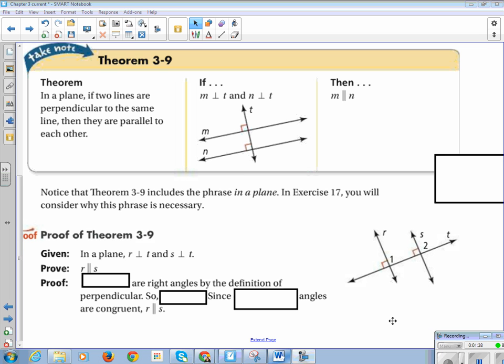All right, so let's look at a proof of Theorem 3-9. In a plane, line R is perpendicular to line T, and line S is perpendicular to line T. Thankfully, this is really short. We're going to prove that line R is parallel to line S. So the first thing we need to know is angle 1 and 2 are right angles by the definition of perpendicular. So being perpendicular means you are right angle. That's the definition.